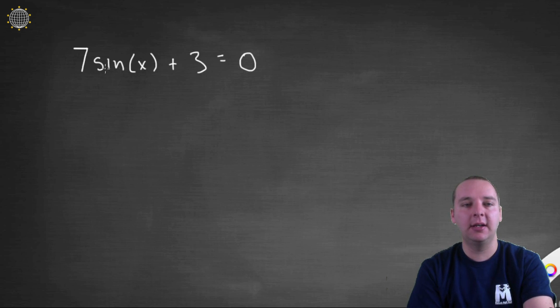Let's say we had 7 sine x plus 3 equals 0. Here we go. We're going to try to solve for x. So we'd have 7 sine x equals negative 3 and we'd have sine of x equals negative 3 over 7.